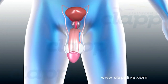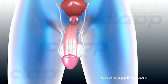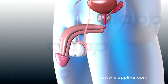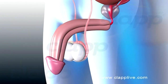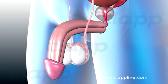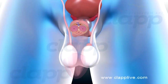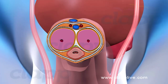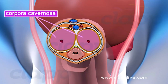The penis is the copulatory organ of man. It is a cylindrical organ suspended in front of the scrotum. The interior of the penis is formed of three cylindrical cords of erectile spongy tissue. Two of these cords are called corpora cavernosa and are thicker, located on the right and left sides of the penis.